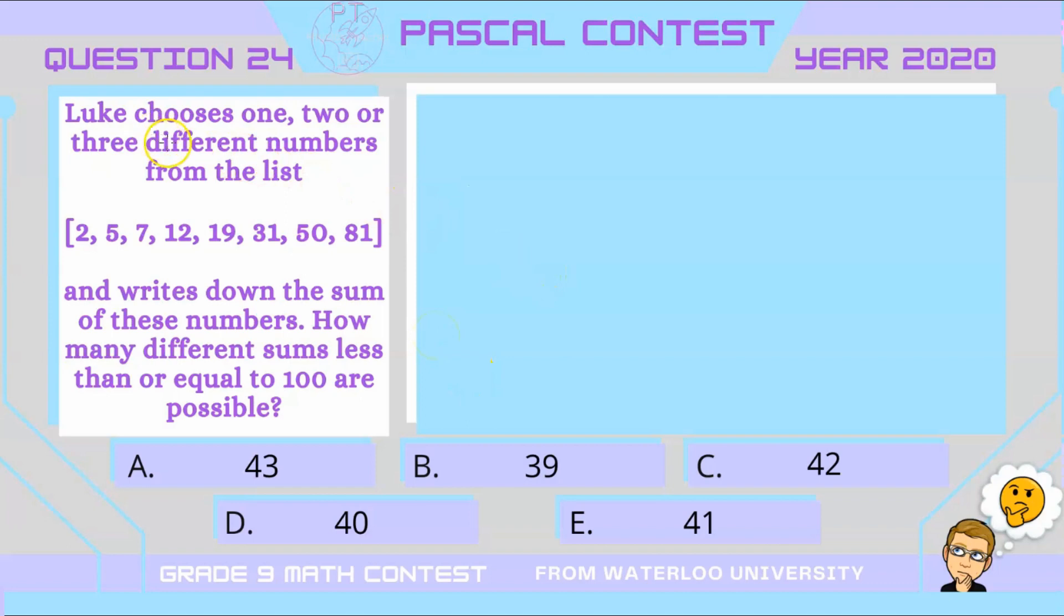All right, so in this question we have a list of numbers and Luke is going to either choose one, two, or three different numbers from the list. How many different sums less than or equal to 100 are possible? We want to know the total number of possible sums that we could have out of Luke's choices. Right from the bat we can see that if Luke chooses one, there were eight possibilities and they're all less than 100. So we have a total of eight possibilities so far.